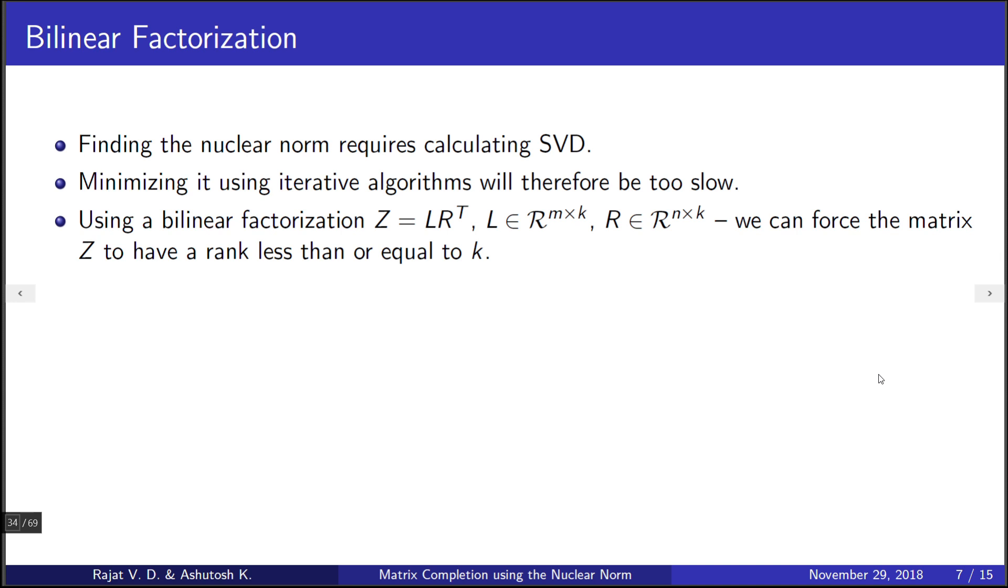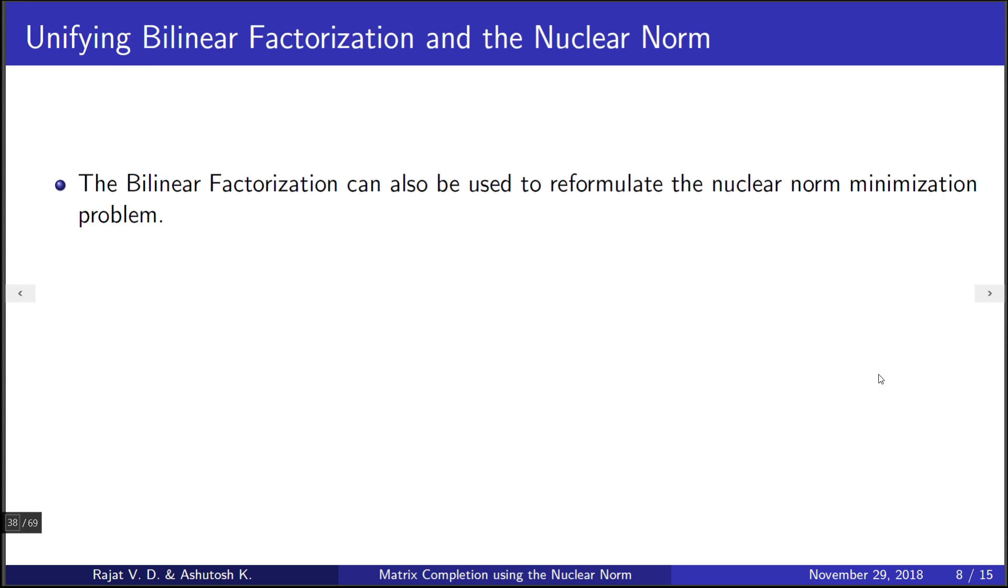We can say that Z can be decomposed into a product of a tall and a fat matrix with orders m cross k and k cross n respectively, which will then force the rank of Z to be less than or equal to k. This concept can be used to make nuclear norm minimization simpler.